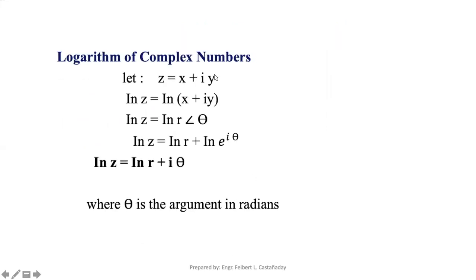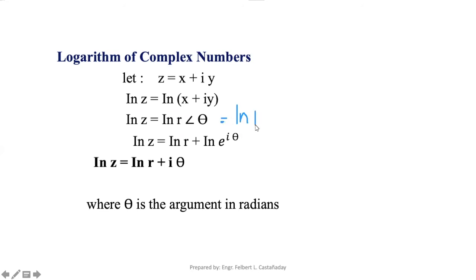For the logarithm of complex numbers, if a complex number is in rectangular form z equals x plus iy, taking the logarithm of both sides gives ln(z) equals ln(x + iy). On the right side, convert the rectangular form into polar form and then into exponential form: the corresponding exponential form is R times e raised to i theta, where theta is in radian measure. So this becomes ln of the product R times e^(iθ).